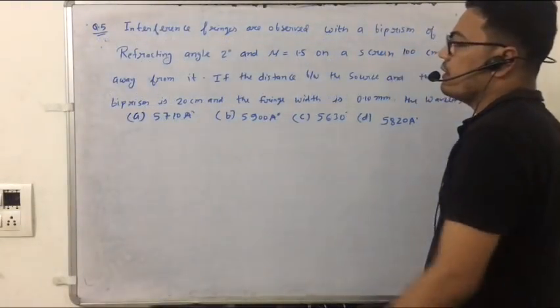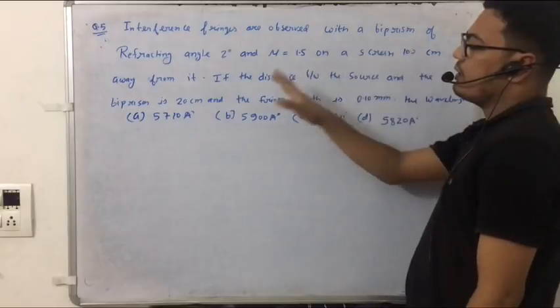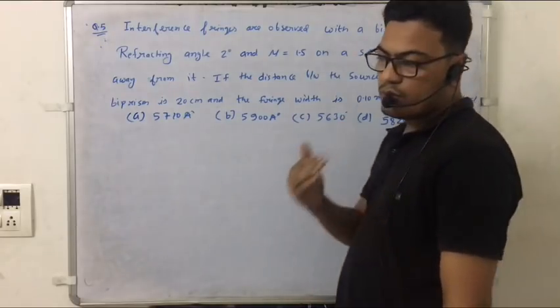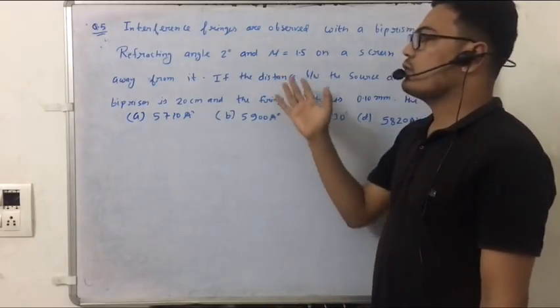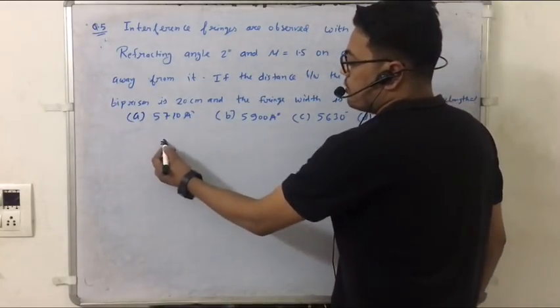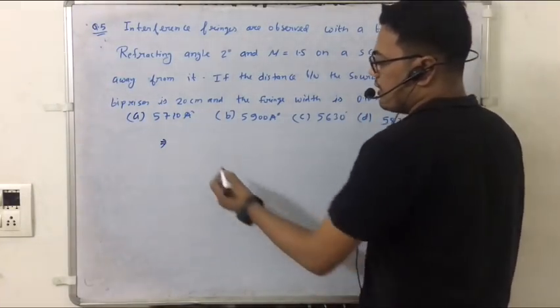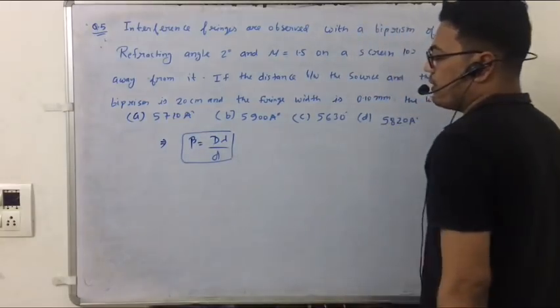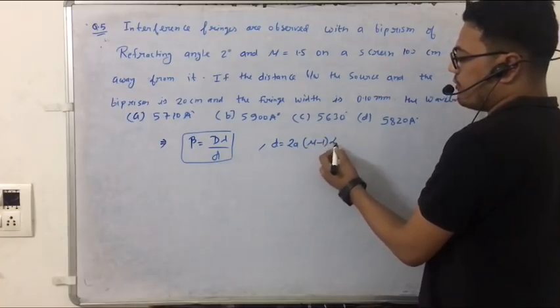Question number 5: interference fringes are observed with a biprism of refractive angle 2 degree at distance 100 cm away from it, with the distance between the source and the biprism 20 cm. The fringe width is given. So the question was very complicated. Basically, this was the Fresnel biprism. So let's talk about this. Fresnel biprism, if you have seen it, we will discuss it. So you know, what was the case of the Young double-slit experiment? He gave the fringe width formula.